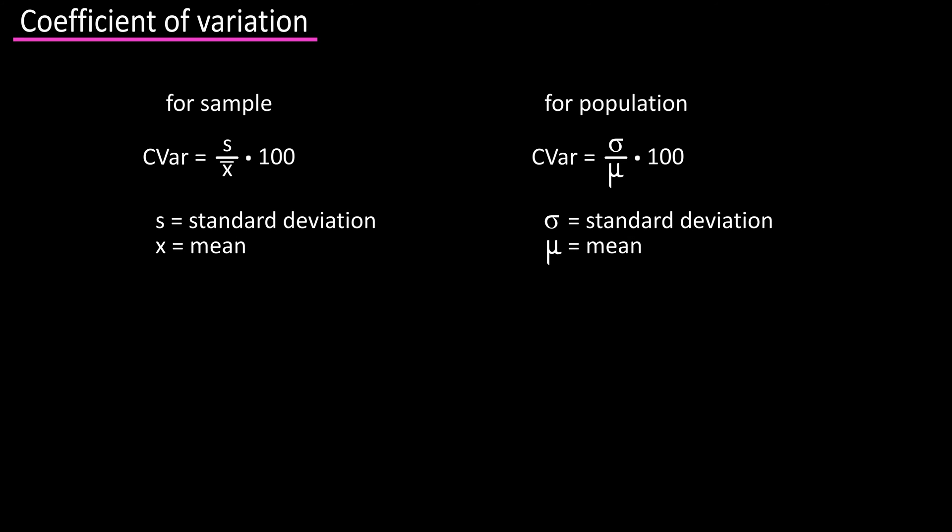Here are the formulas for the coefficient of variation for a sample and a population. For a sample, C-var equals s (the standard deviation) over x-bar (the mean) times 100 to give a percentage. For a population, C-var equals sigma (the standard deviation) over mu (the mean) times 100.